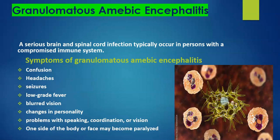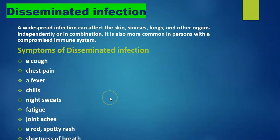One side of the body or face may become paralyzed. Here we see a diagram, which is very important for understanding granulomatous amoebic encephalitis. Next, we look at disseminated infection — a widespread infection that can affect the skin, sinuses, lungs, and other organs independently or in combination.